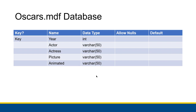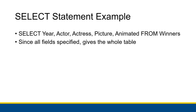Looking at the field names and types helps us work through the SELECT statement examples. For example, to get the entirety of the table we could specify all fields: SELECT year, actor, actress, picture, animated FROM winners. That gets all fields from the winners table in that precise order and returns all records, since we haven't specified which ones to include or exclude. This is the kind of SQL SELECT statement we might have briefly seen in the query builder in the previous chapter.